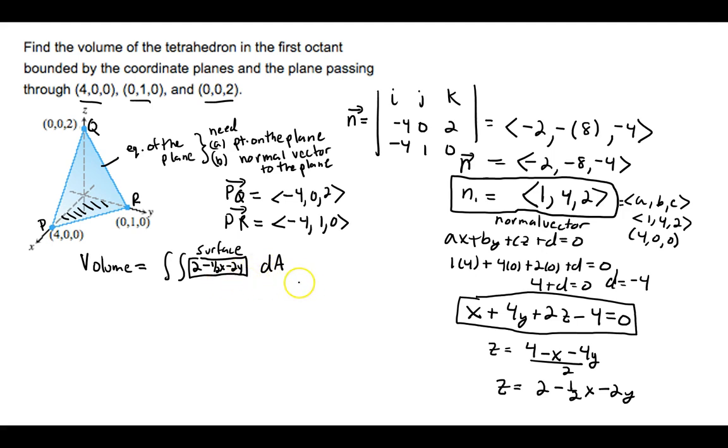We just have to decide whether we want to do dy dx or dx dy based on the triangle that's in the XY plane. As a triple integral, we put a 1 in the integrand and decide which variable to integrate out first. This is perfect to integrate out Z first—Z lives between 0 and that surface.